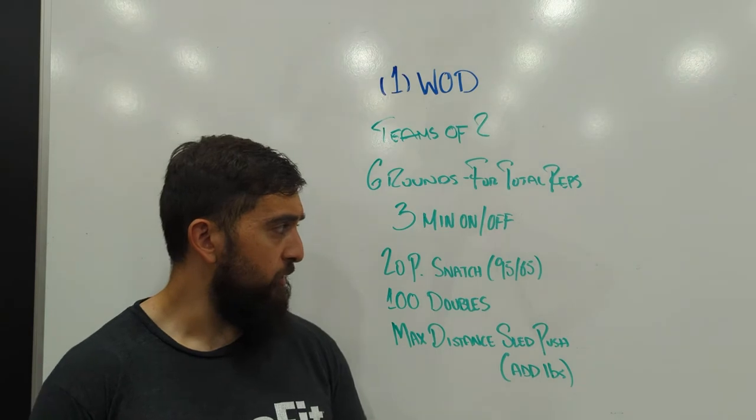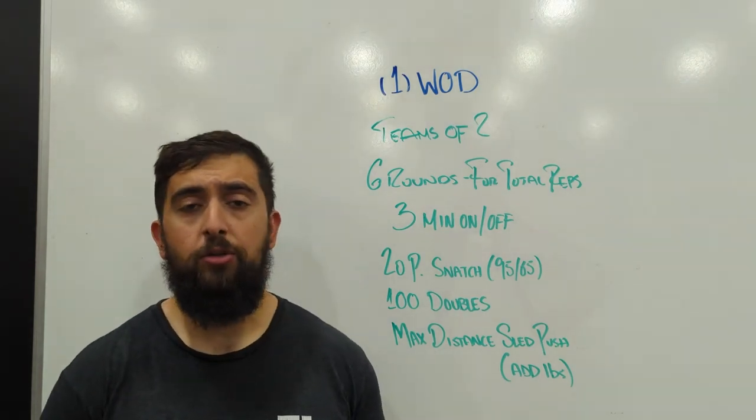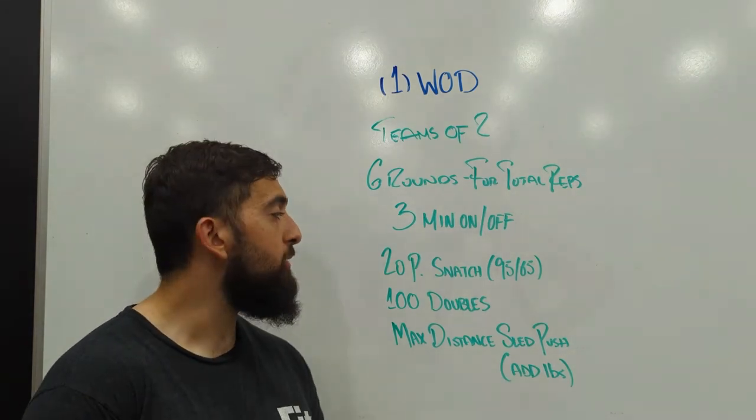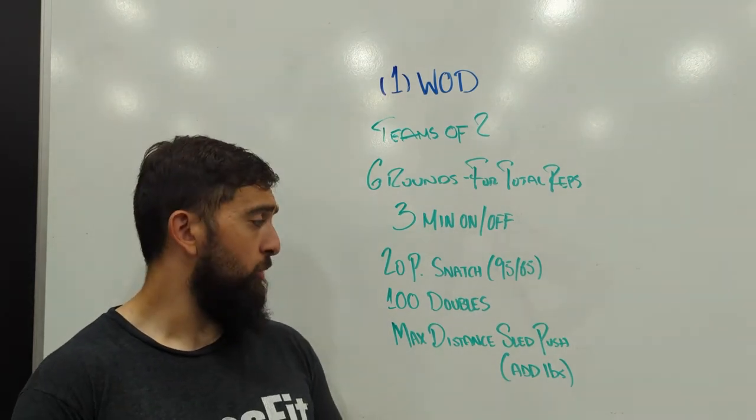So we got 20 power snatches to start off with. With these, you're going to break it up within your partner. So one can do 10, then the other can do 10, or if you want to do fives, fours, whatever that is, to get 20 power snatches done with your partners. Only one partner working at a time.